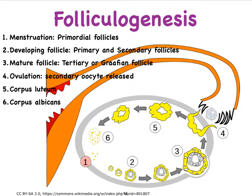Most of our follicles are going to be primordial follicles. At birth, or definitely at the time of puberty, all of our follicles are primordial follicles except for a few that begin the maturation process. Every month, a few lucky follicles begin to mature, and ultimately only one of all of those is going to participate in ovulation.